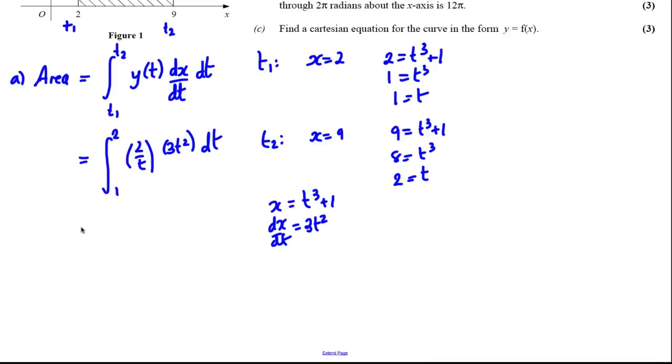Okay, so now we can tidy things up a little bit. This is the integral between 1 and 2. 2 over t multiplied by 3t squared. That would be 6t squared over t dt. And obviously, we can simplify, one of the t's cancels, so that would be simply 6t dt.